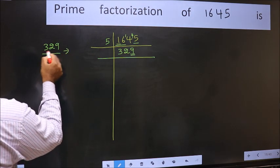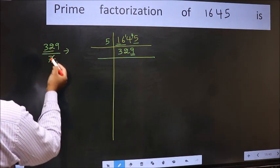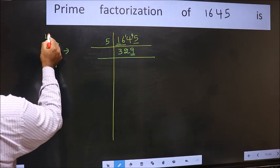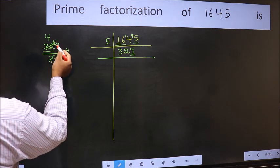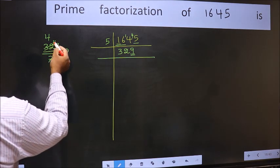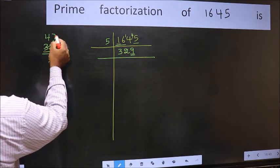A number close to 32 in the 7 table is 7 times 4 equals 28. 32 minus 28 equals 4, carry forward 4 to make 49. When do we get 49 in the 7 table? 7 times 7 equals 49.